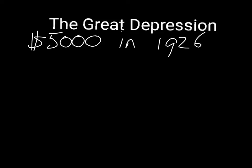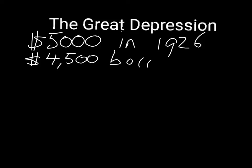To look at an example of somebody borrowing money to buy stocks, let's say that somebody is buying $5,000 worth of stocks in, let's say, 1926. At the time, people were allowed to borrow 90% of the value of the stocks that they bought. So let's say that they borrowed $4,500, which is 90% of $5,000, and so they only had to come up with $500 of their own money.